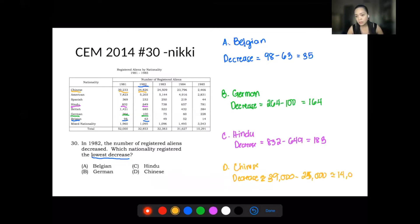And that is approximately 14,000. So when we say lowest decrease, the answer there is 35, so the answer is Belgian.